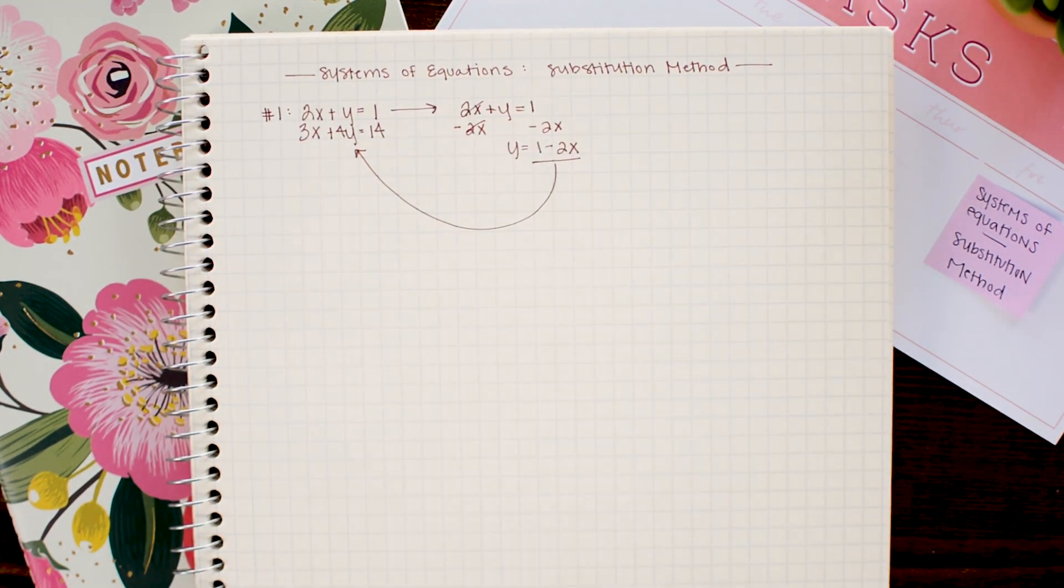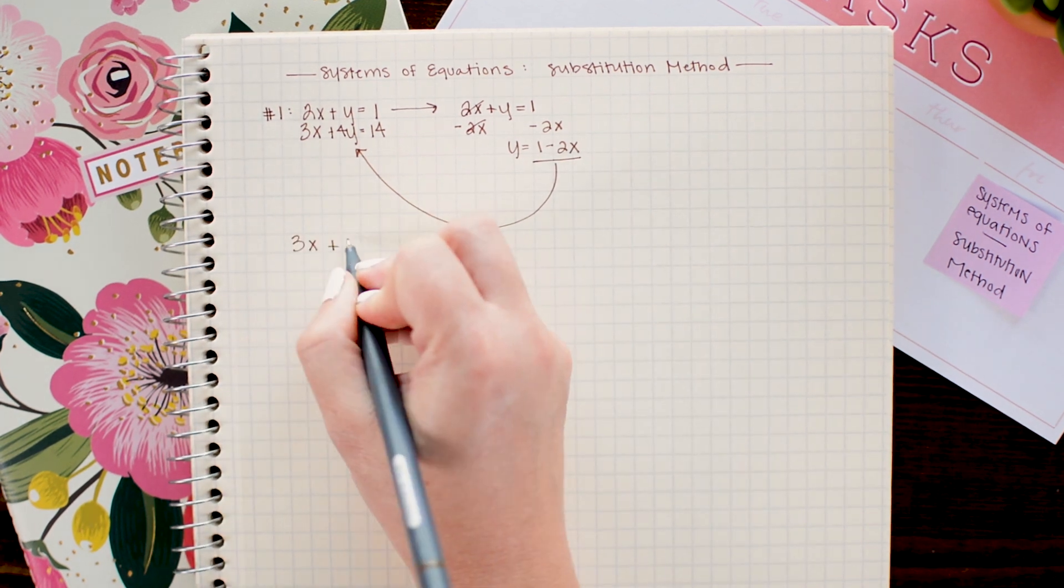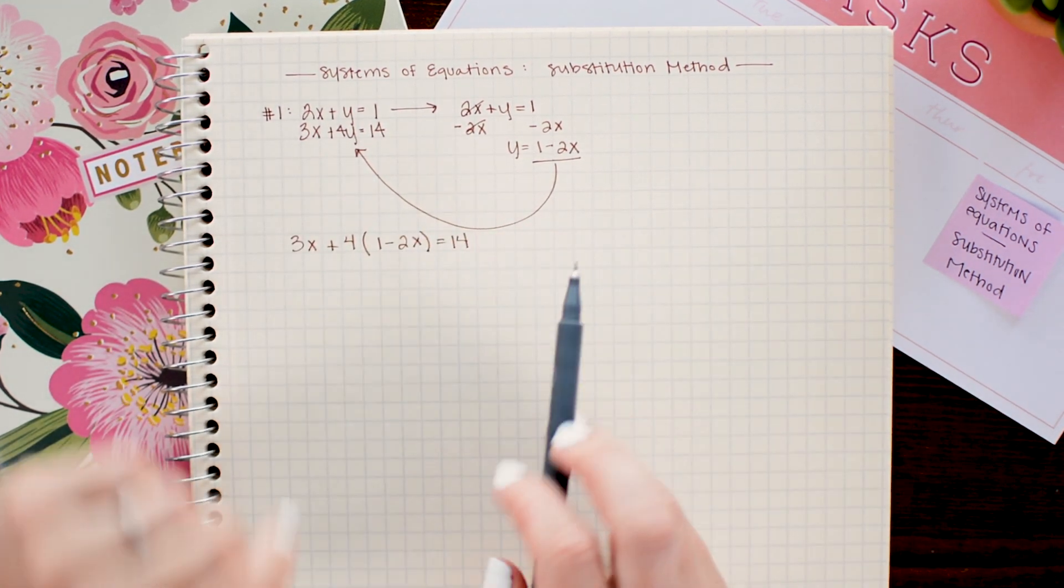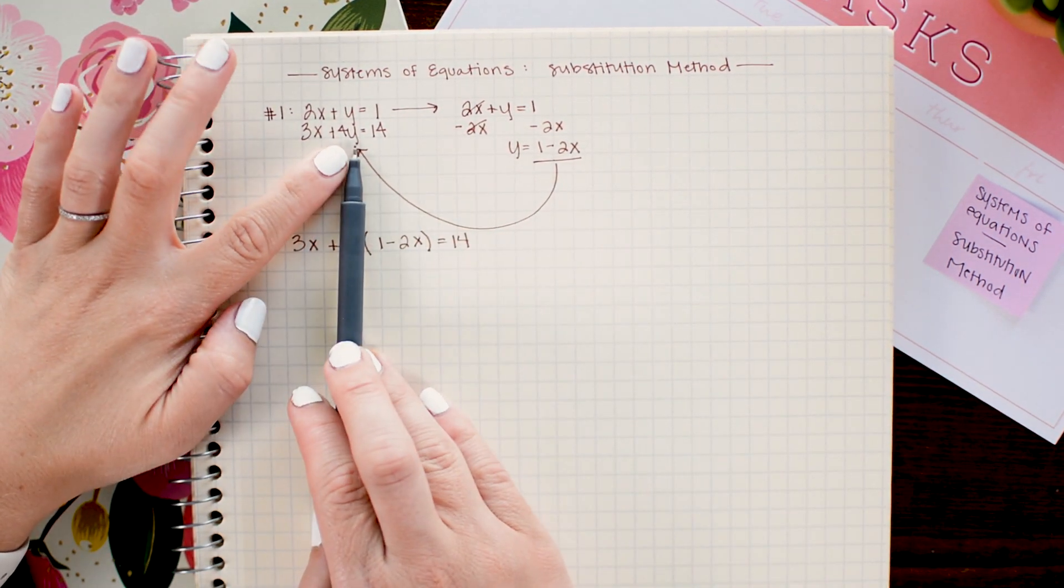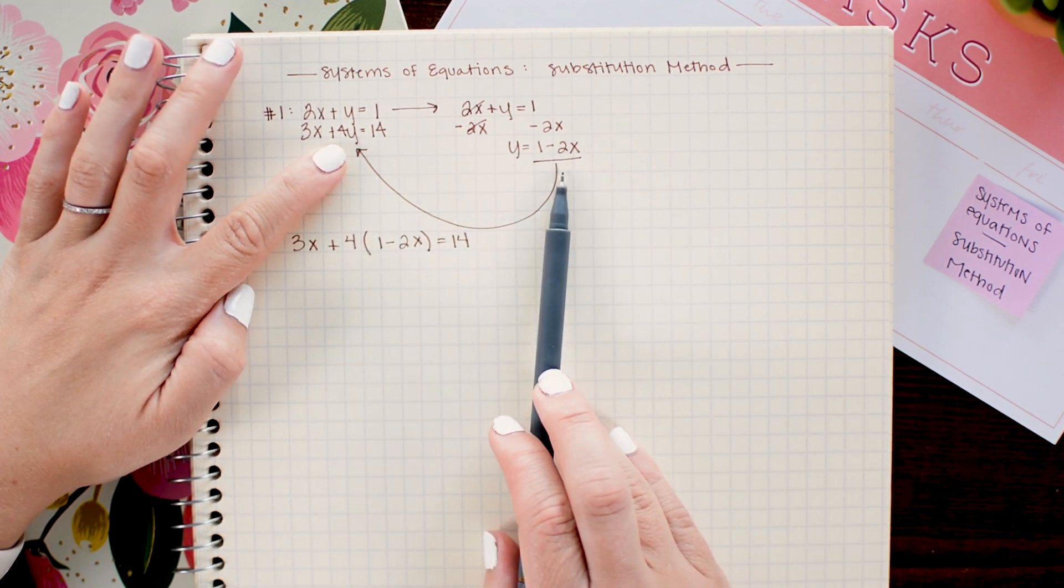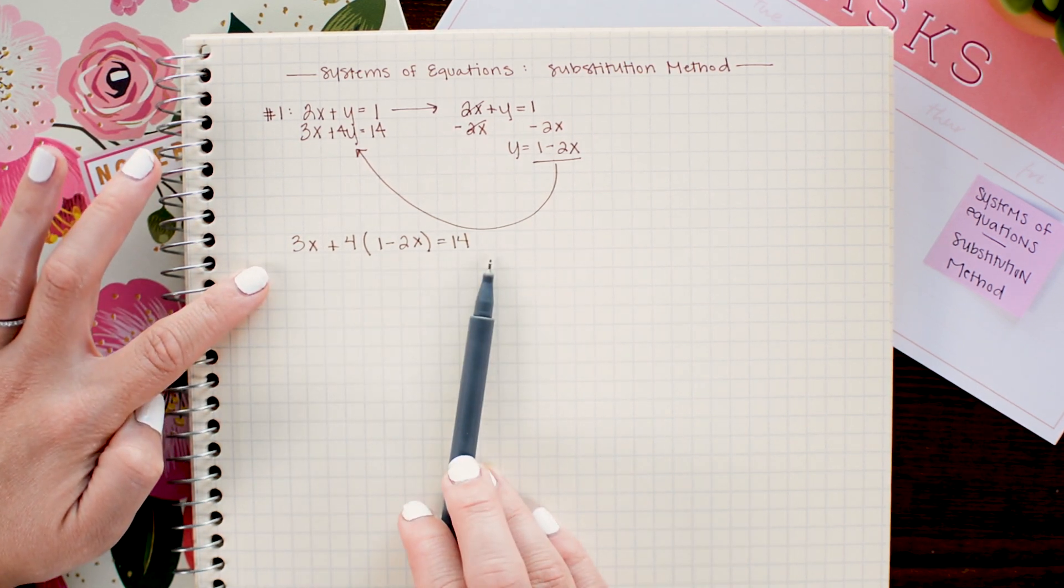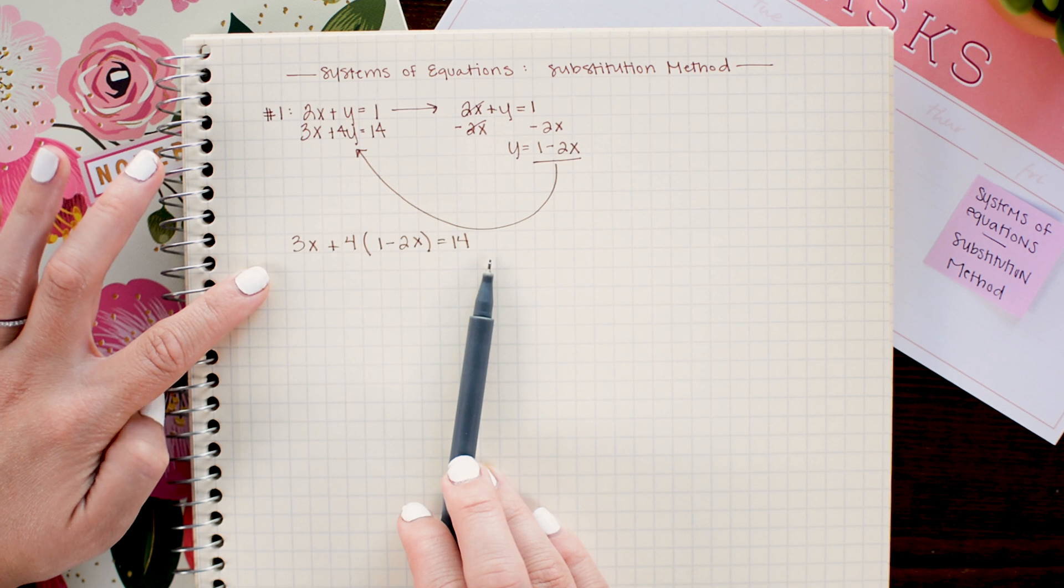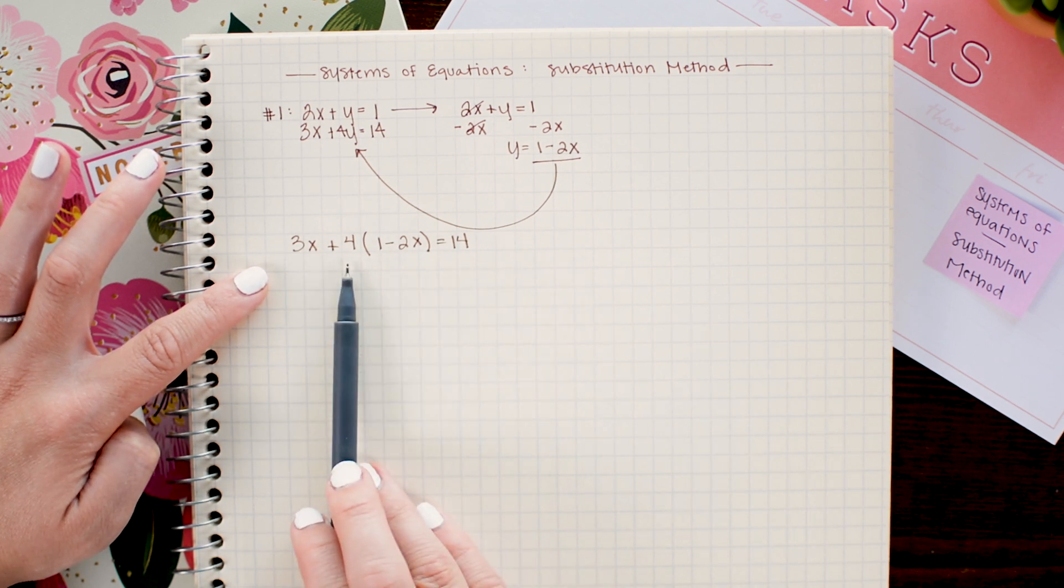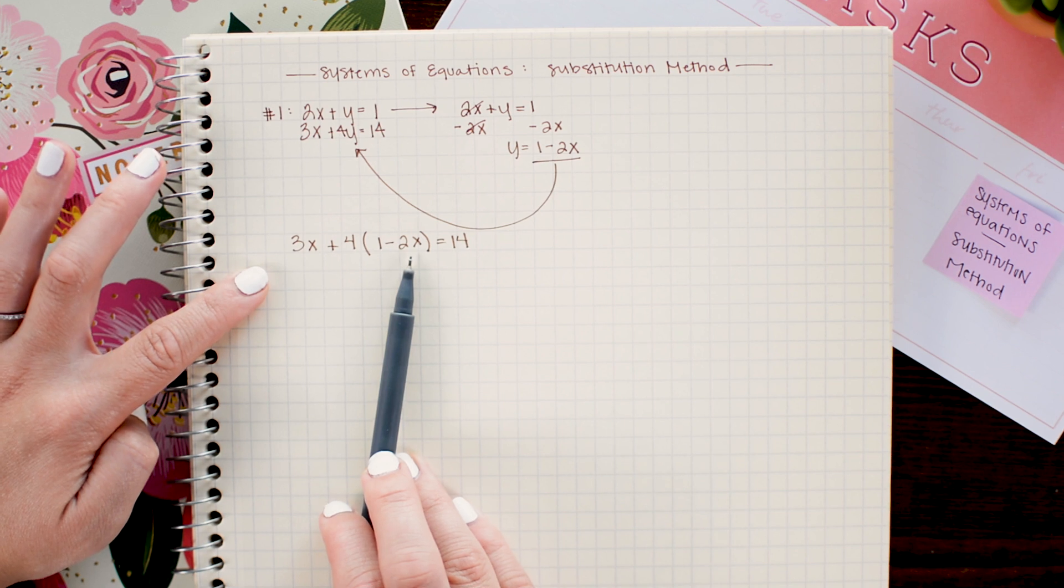What that will give me is an equation that only has x variables and once I have an equation with one variable I can solve for that variable. So here I have replaced y in this equation with what y is equivalent to which is 1 minus 2x and now I have an equation with only x's in it and my next step here is to solve for x. So I'm going to begin by distributing 4 through and then combining like terms and solving.